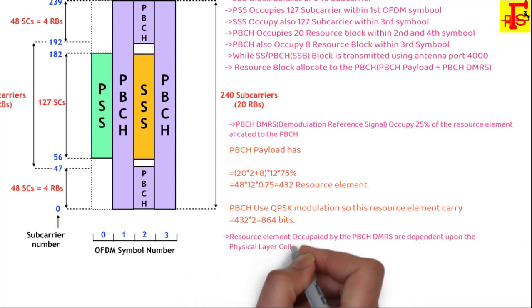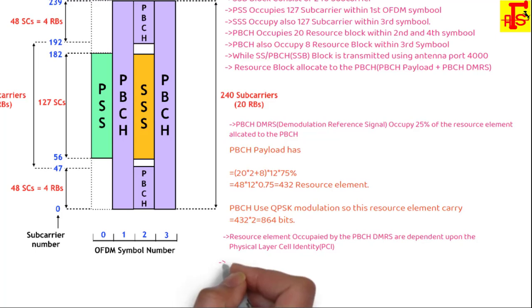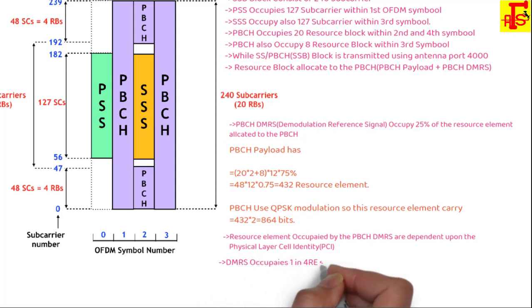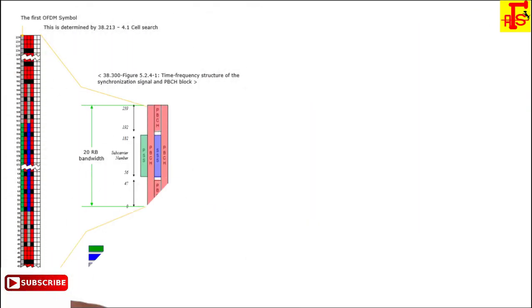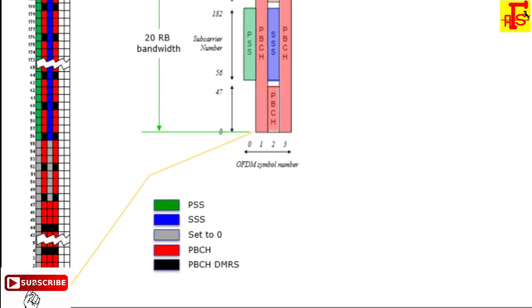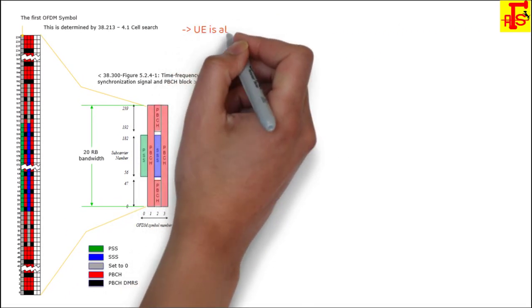Resource elements occupied by PBCH DMRS are dependent upon the physical layer cell identity. If PCI changes, DMRS location changes. DMRS occupies one in every four resource elements. The PCI mod 4 formula is used to calculate and find the DMRS location. PCI mod 4 rule has been assigned to determine its location.